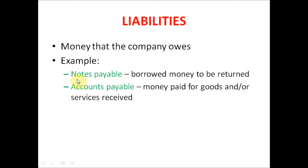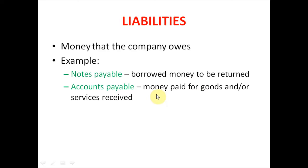Let's look at the first one, notes payable. This is the money that has been borrowed and needs to be returned — we have to pay it back. The second example is accounts payable. This is the money that you owe to the vendors or suppliers for goods received or services received. When you receive these services or goods, you don't pay on the spot; you owe them depending on the terms of the vendor.